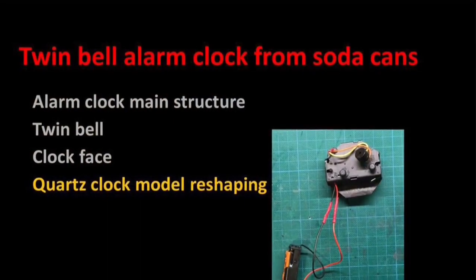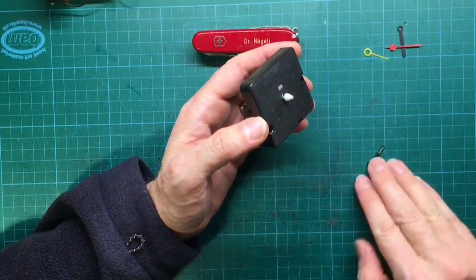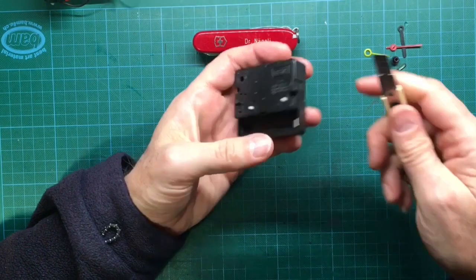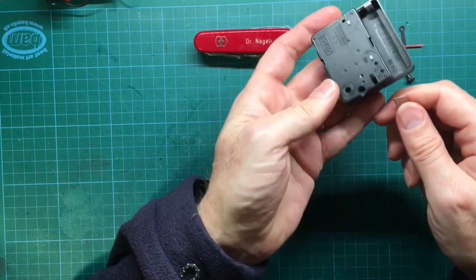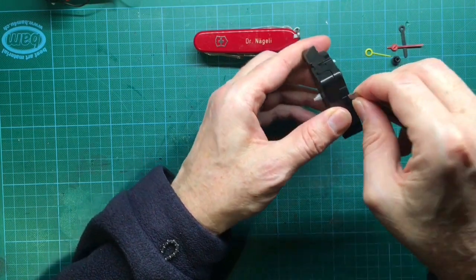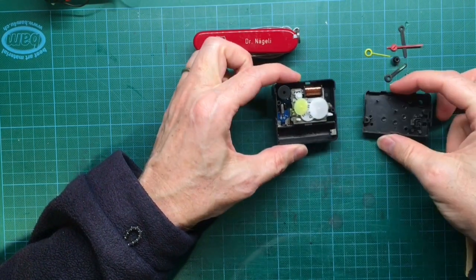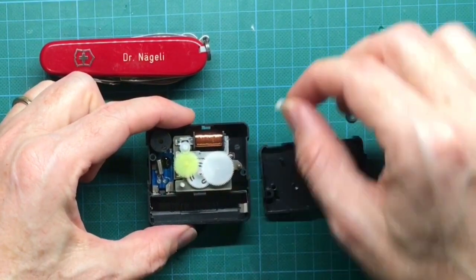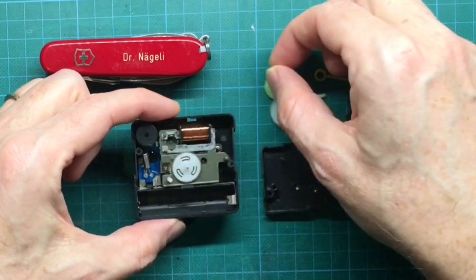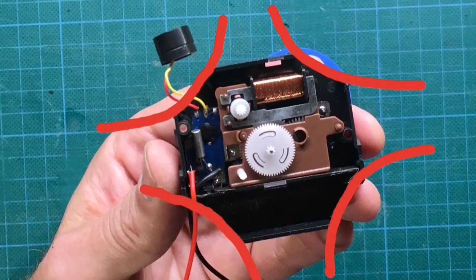The reshaping of the quartz clock module is the next step so it will fit into our soda can. Remove all clock hands from the quartz clock module and then the two black knobs on the reverse side. Lift the four tabs around the frame and then carefully open up the reverse side. Carefully lift the gears from the clockwork. Now we can reshape the size of the frame to fit the soda can. This is done by removing the four edges like indicated in the picture.